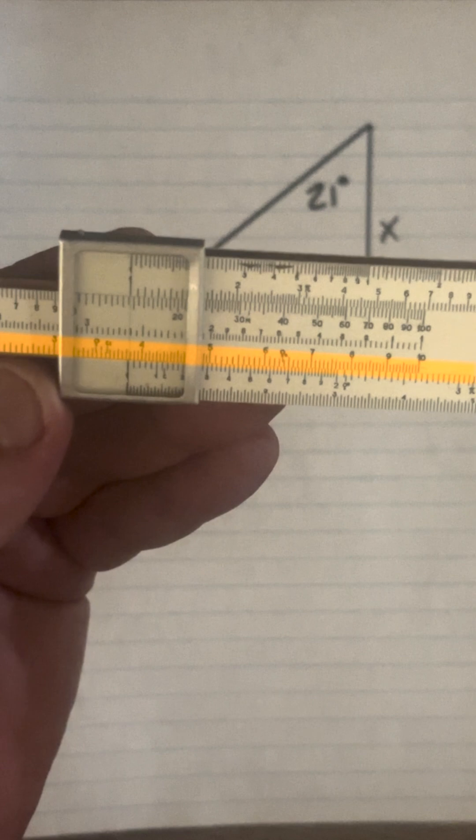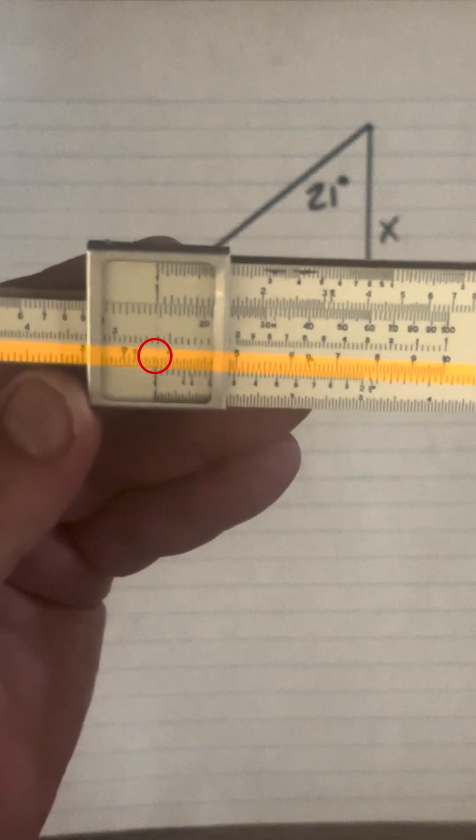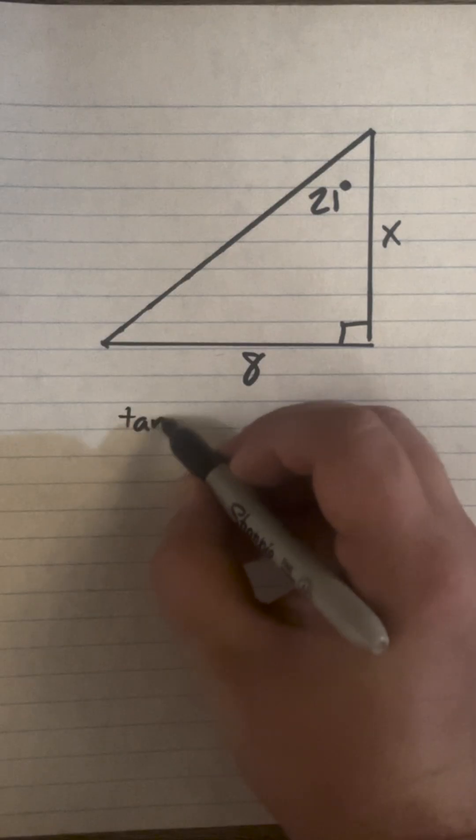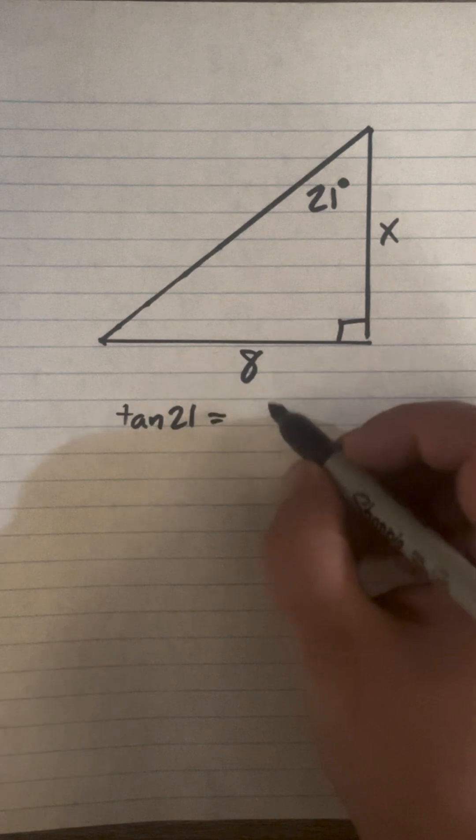That will give me roughly 3.8 on the C scale. So tangent of 21 equals opposite 8 over x.